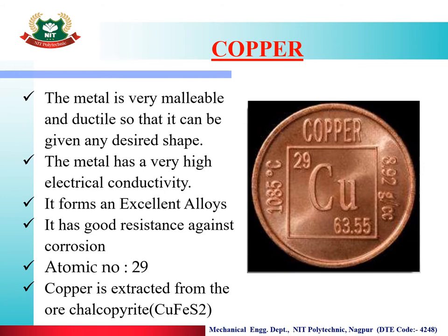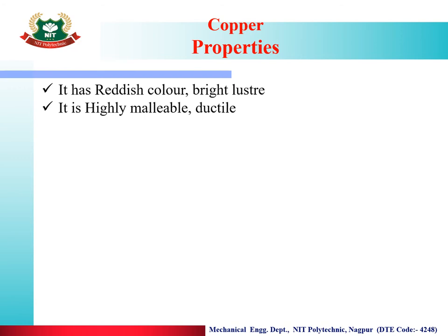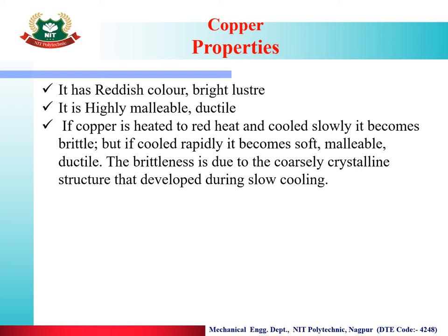Let us discuss the properties of copper. It has a reddish colour and bright lustre. It is highly malleable and ductile — we can make sheets and wires from it. If copper is heated to red heat and cooled slowly, it becomes brittle. But if cooled rapidly, it becomes soft. The brittleness is due to the coarsely crystalline structure that develops during slow cooling.